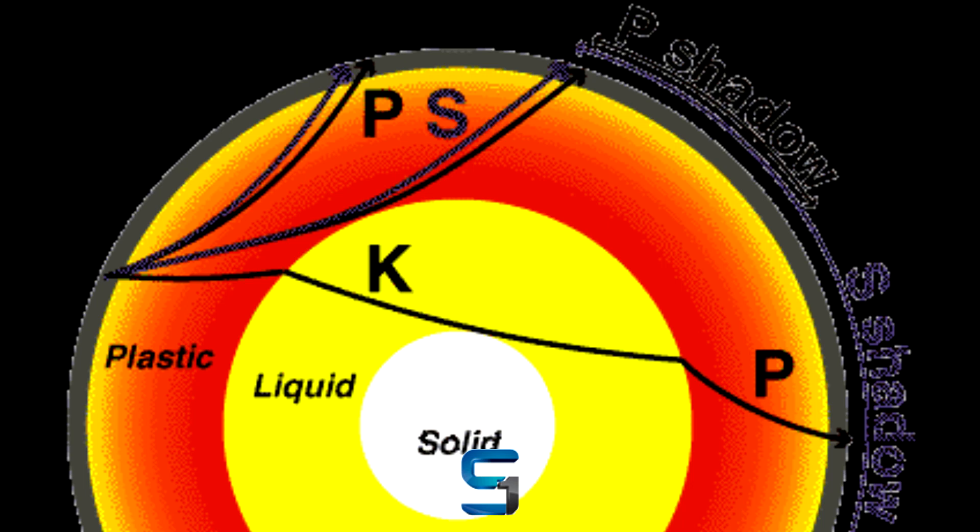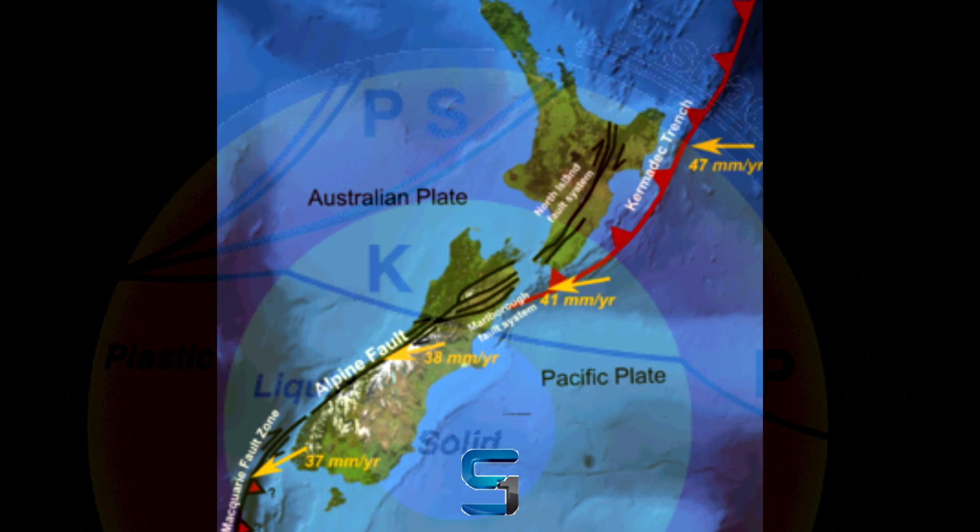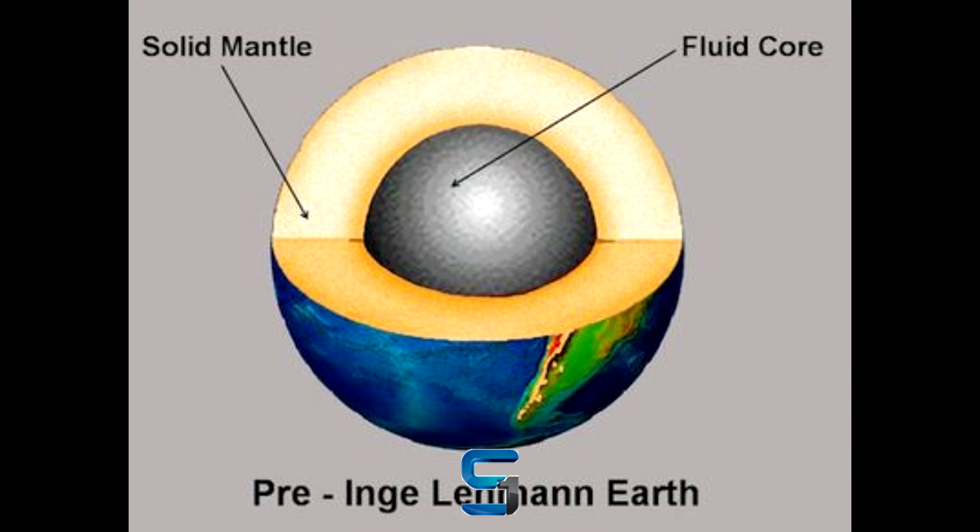The waves were bent when they traveled through liquid materials. As the core bent them, it created a shadow zone where no waves could be felt. But after a 1929 earthquake near New Zealand, Lehmann and others noticed something odd. Some of these waves could be faintly detected by seismometers in Europe. If the core was entirely molten, this shouldn't have been possible.